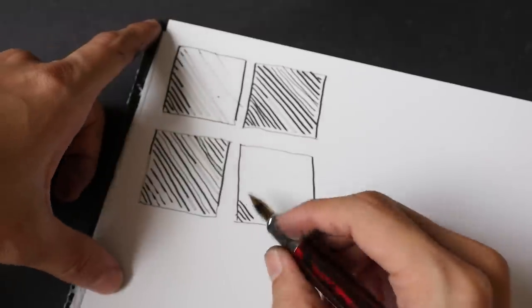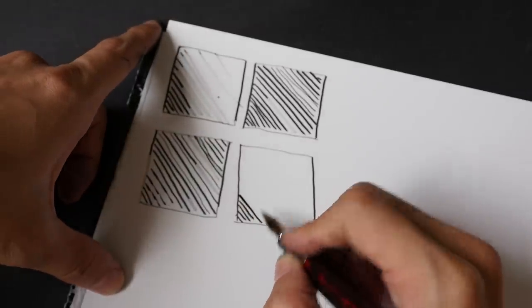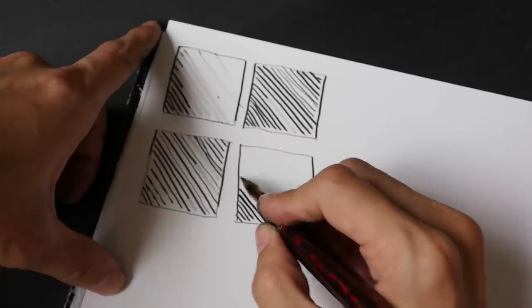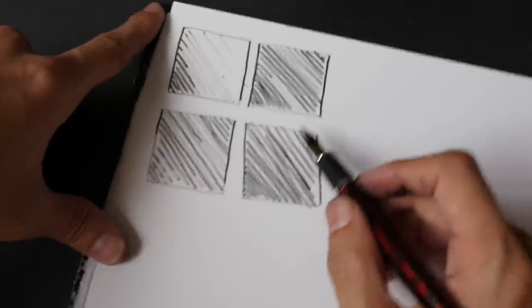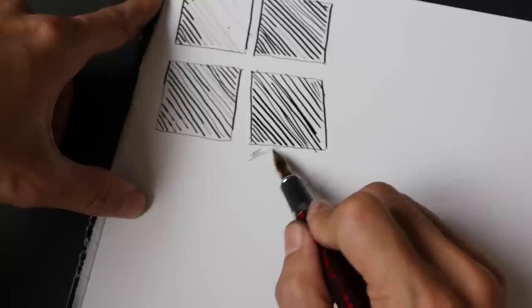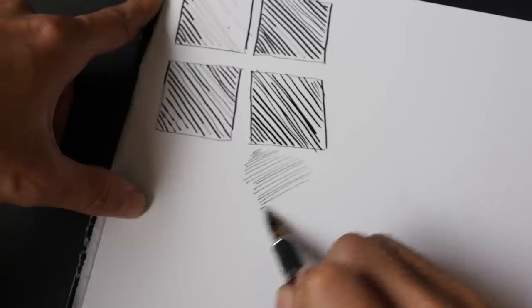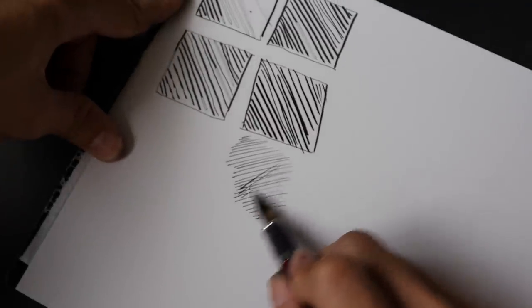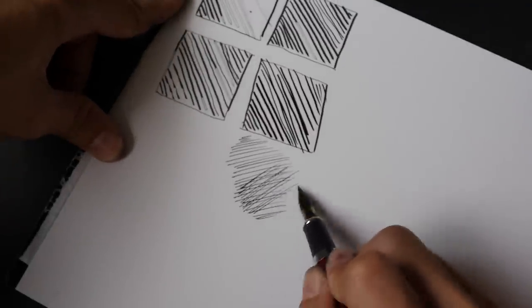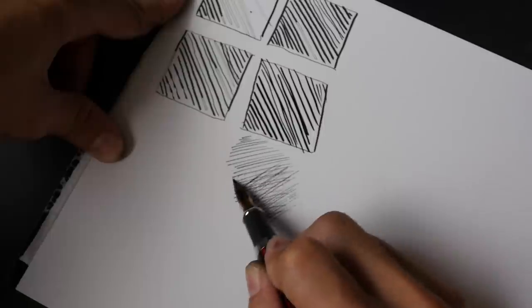So, let's see if it actually works. It works very well. So, you can even use it for cross-hatching but the nib is actually very thin and it might cut into the paper. So, be careful when you are doing cross-hatching like this. That's all for the modification.